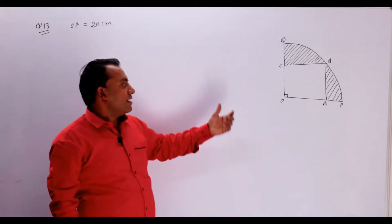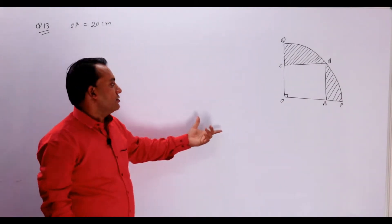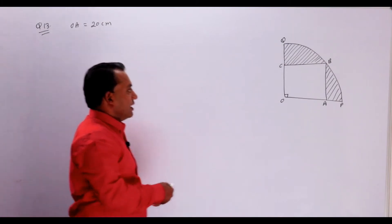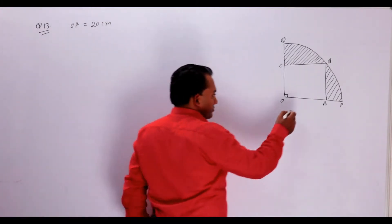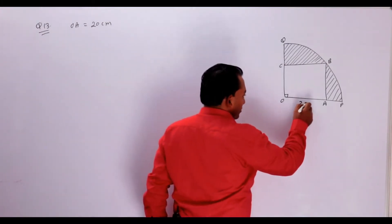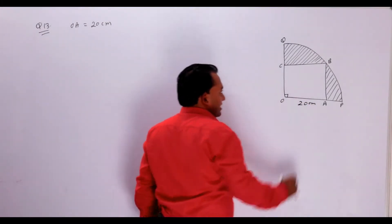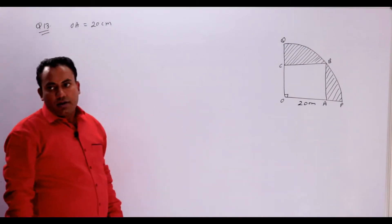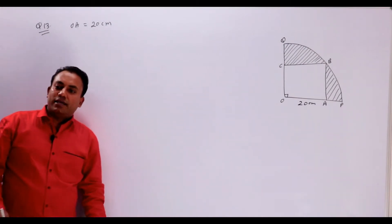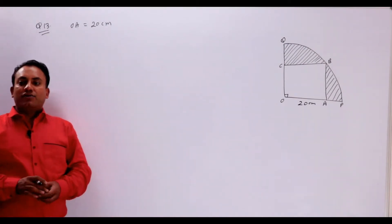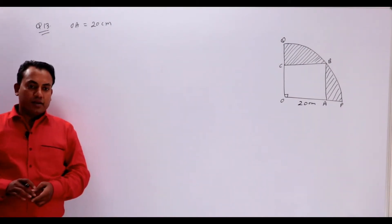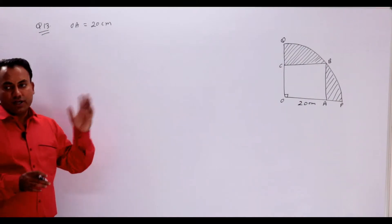Area of square easily nikal sakte hain kyunki side dekho yeh raha — 20 cm. Area of square kya hota hai? Side into side, matlab 400 ho gaya.